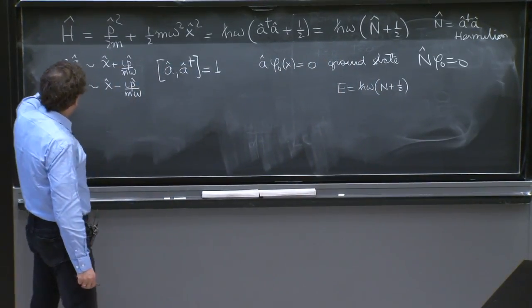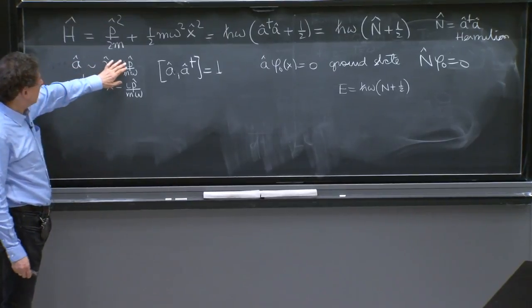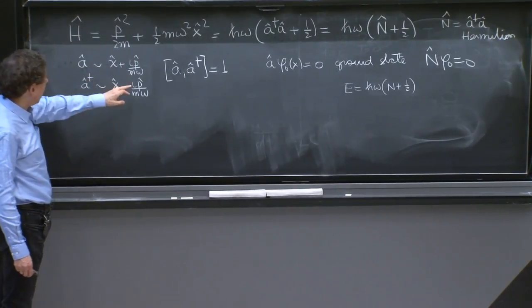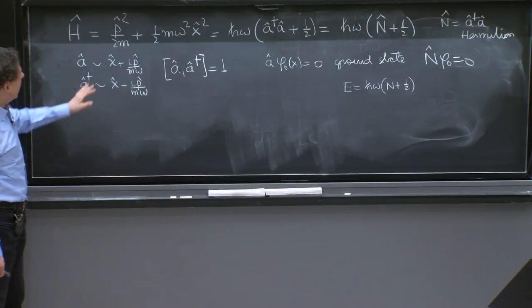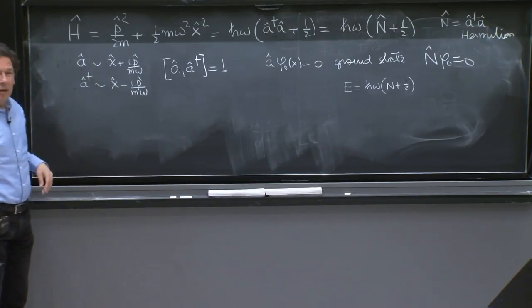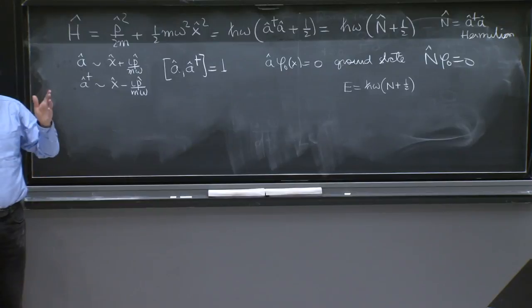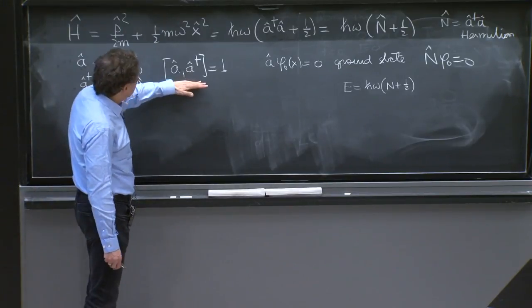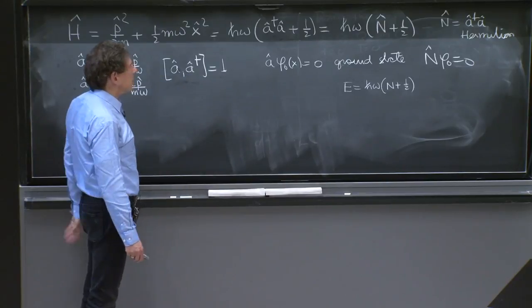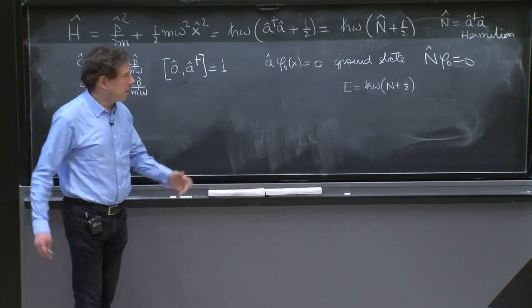And then a was related to x and p, and so was a dagger. Recall that x and p are Hermitian. There are overall constants here that we wrote last time, but now they're not that urgent. And a and a dagger, the commutator is equal to 1. That was very useful.